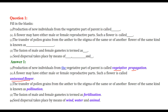The transfer of pollen grain from the anther to the stigma of the same or of another flower of the same kind is known as pollination. The fusion of male and female gametes is termed as fertilization. Seed dispersal takes place by means of wind, water, and animals.